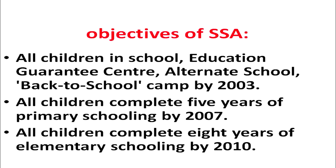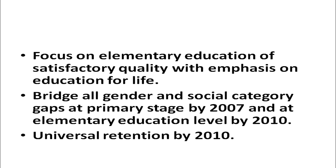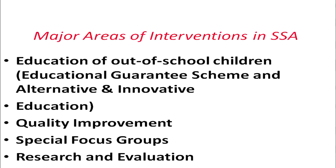The objectives of SSA are: all children in school, education guarantee centers, alternative schools, back-to-school camps by 2009; all children complete 5 years of primary schooling by 2007; all children complete 8 years of elementary schooling by 2010; focus on elementary education of satisfactory quality with emphasis on education for life; bridge all gender and social category gaps at primary stage by 2007 and at elementary education level by 2010; and universal retention by 2010.